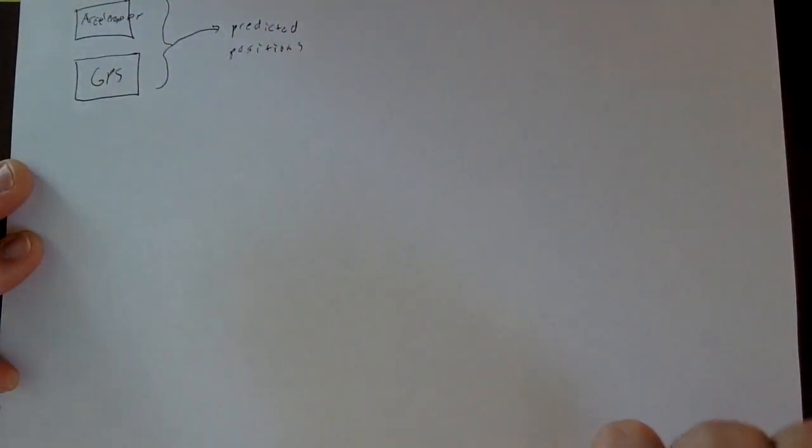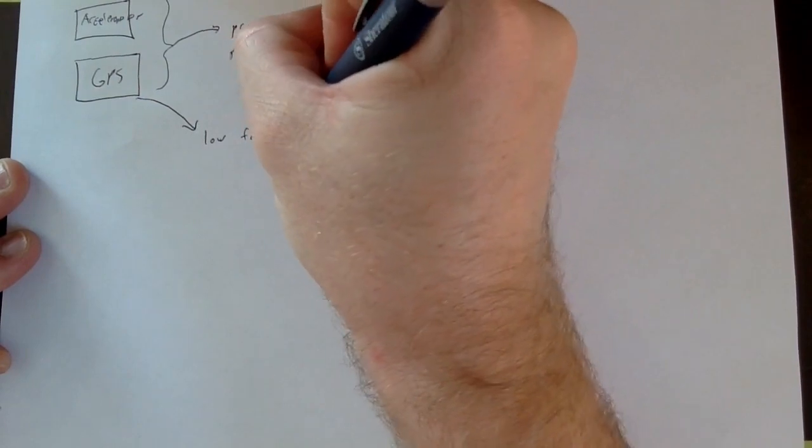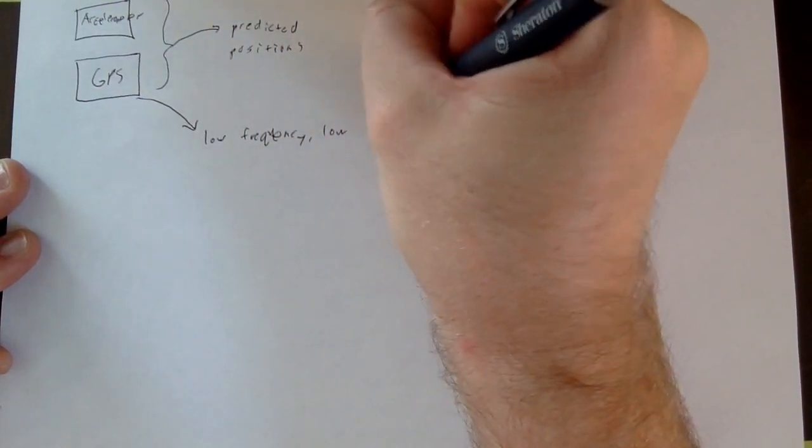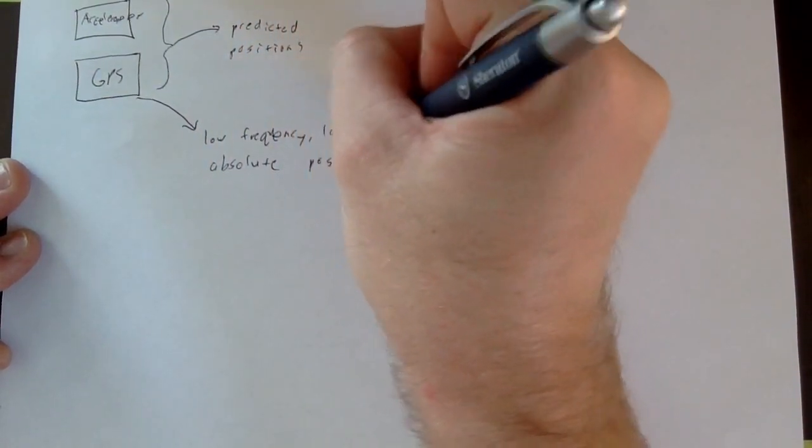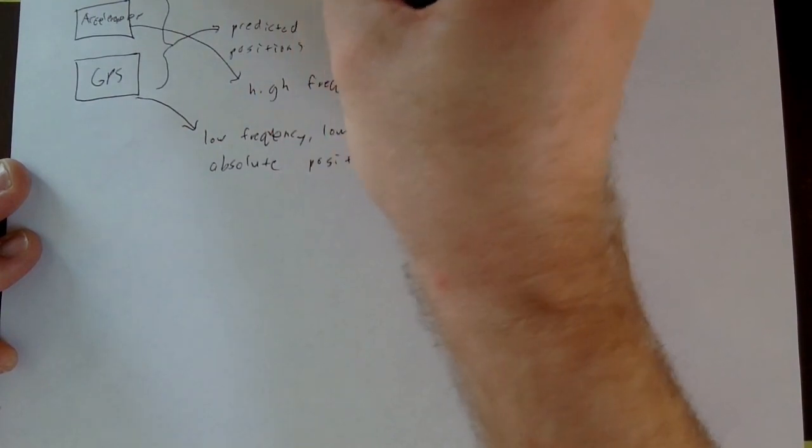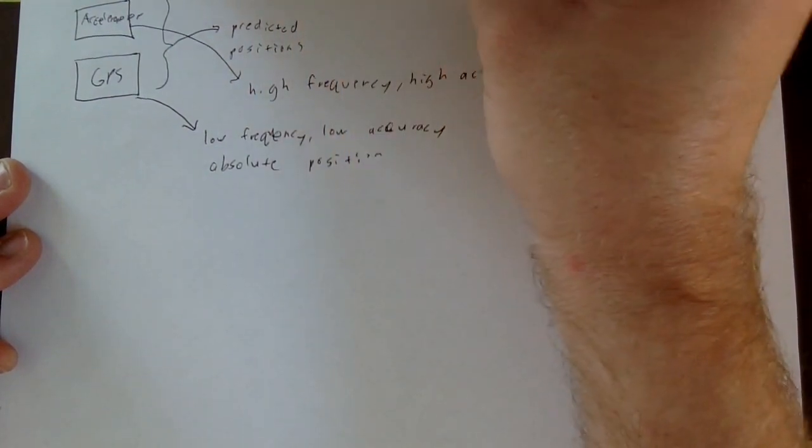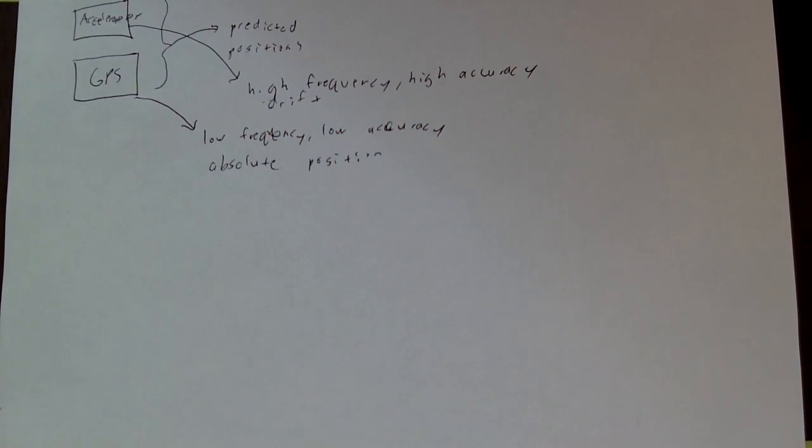Step two is just how these sensors actually complement each other. A GPS is going to be low frequency and low accuracy, but the values are relative to some absolute position. Your accelerometer is actually the opposite—high frequency and high accuracy, but it's going to be subject to drift. What that means is that over time it's going to accumulate errors, so even the smallest amount of error will accumulate and after even several seconds your predictive position is going to be way far off from the actual real position.